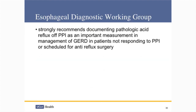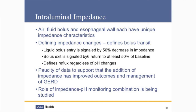The Esophageal Diagnostic Working Group strongly recommends documenting pathological acid. All of us have physiological acid — we want to know if there are abnormal symptoms or complications, and we recommend documenting it off PPI therapy, as it is an important measurement in the management of GERD, especially in patients not responding to PPI and anyone scheduled for anti-reflux therapy. Briefly, intraluminal impedance — not every center has it — is based on the fact that air, fluid, and esophageal wall all have unique properties, but there's somewhat a lack of data right now to support addition of impedance routinely. Many doctors use it to look at bolus transit and non-acid reflux.